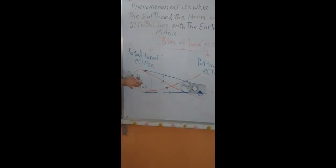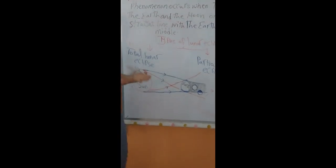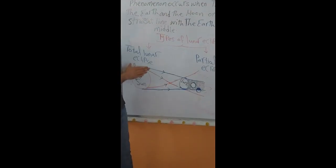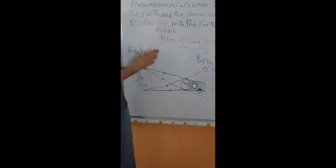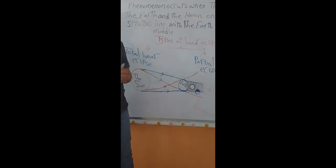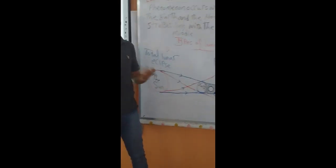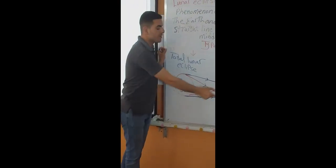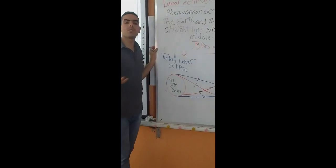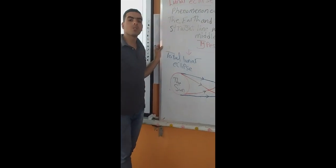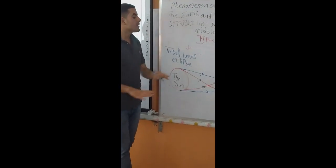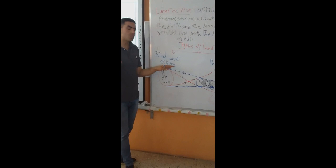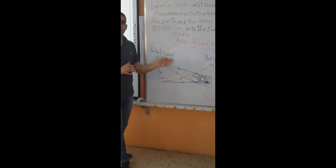Is there an annular lunar eclipse? The answer is no. Because the size of the Earth is greater than the size of the moon, so the Earth blocks the whole radiation of the sun from the moon — an annular type is not possible.